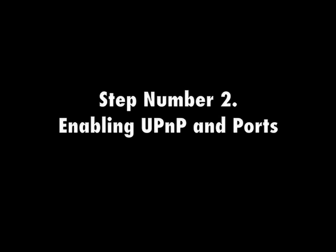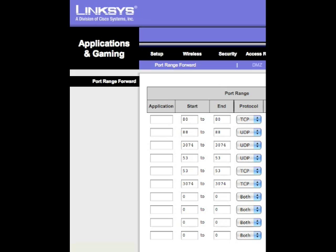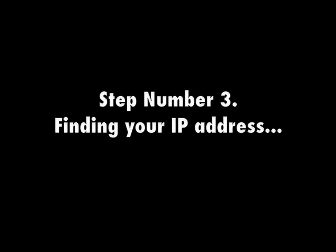For this step, there should be a column where you're able to enable UPnP. Copy down exactly what the picture shows, and copy all of that down. Then we're going to move into step number three, which is finding your IP address.